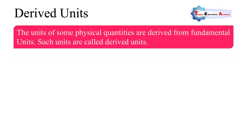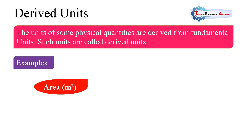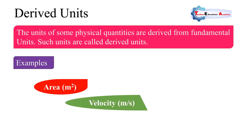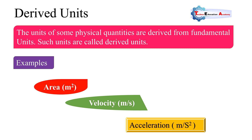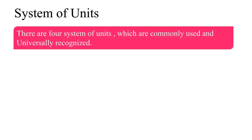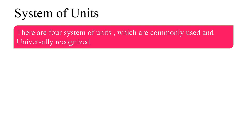What are derived units? The units of some physical quantities are derived from fundamental units — such units are called derived units. For example, area has the unit meter square, velocity has the unit meter per second, and acceleration has the unit meter per second square. These are all derived units from the fundamental units.